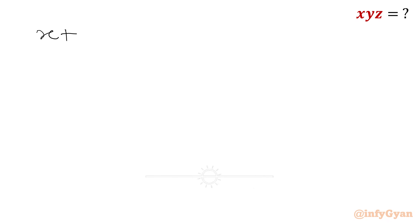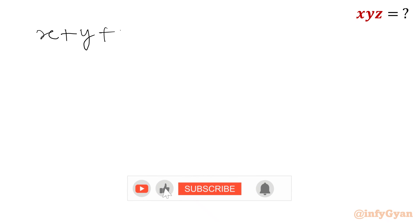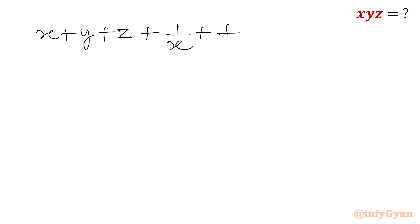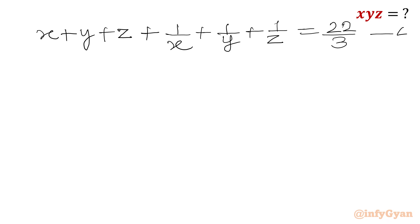Equation 4: x plus y plus z plus 1 over x plus 1 over y plus 1 over z equals 22 over 3.